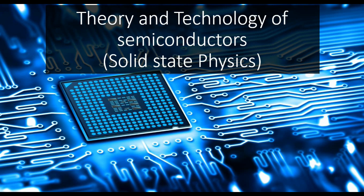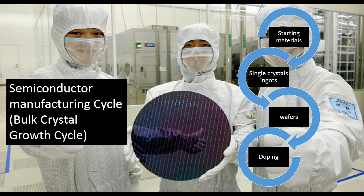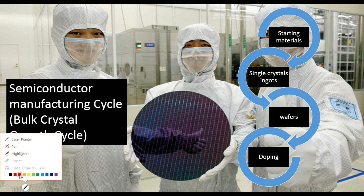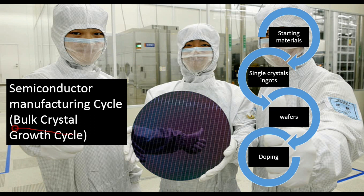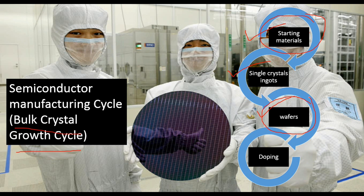In this lecture we will discuss about doping. In the last lesson we discussed about the bulk crystal growth cycle — starting with the starting materials, that is silicon dioxide, then silicon crystal ingots, then wafers. Doping plays a very important role in changing the electronic property of that material. Doping can be done either at this stage or after we have got the wafers. So let's study what is doping.